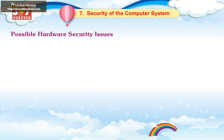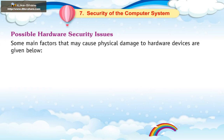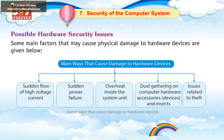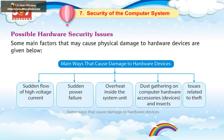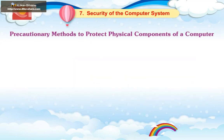Possible Hardware Security Issues: Some main factors that may cause physical damage to hardware devices are: sudden flow of high voltage current, sudden power failure, overheat inside the system unit, dust gathering on computer hardware accessories, and issues related to theft. Precautionary methods to protect physical components of a computer are outlined below.